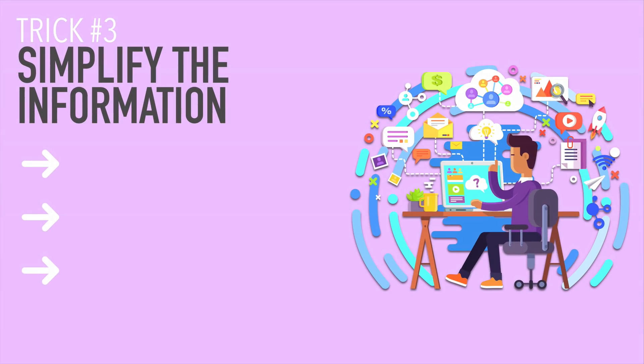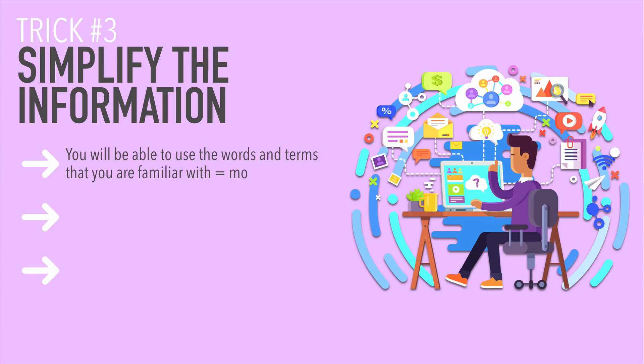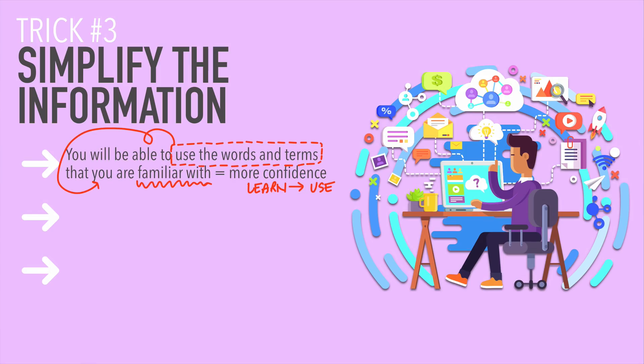Number three: simplify the information. This is so important. By simplifying, you will be able to use the words and terms that you are familiar with — which equals more confidence. As an English learner, you are always learning new things, but you have to put them into use, and when you do, that equals more confidence.